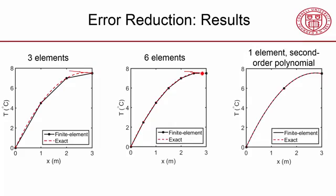And then I'm also showing you the result with a second-order polynomial with just one element, okay? So this is one element with three nodes. And I have a quadratic shape in between, in that element.